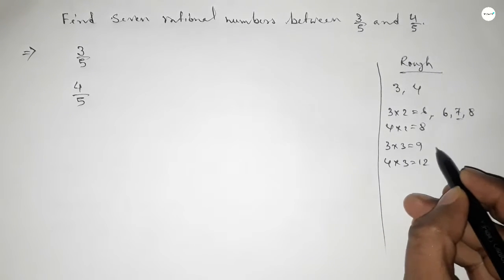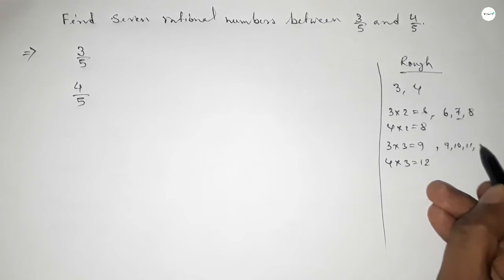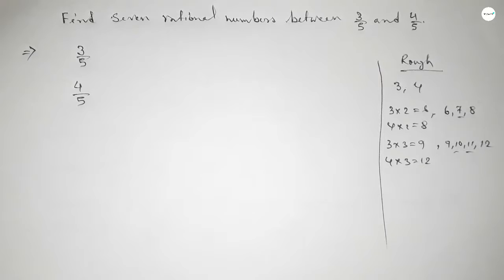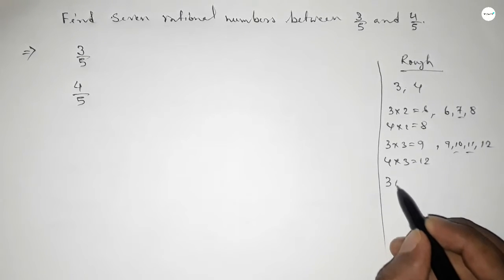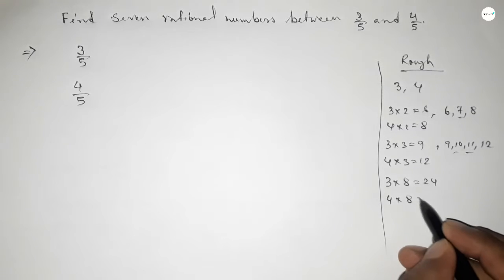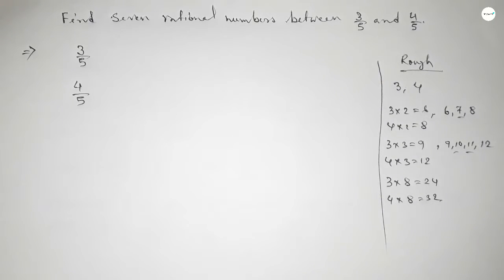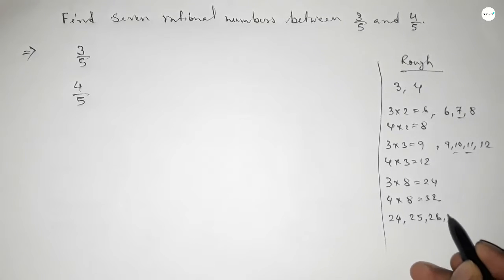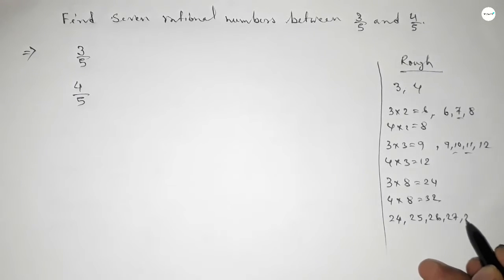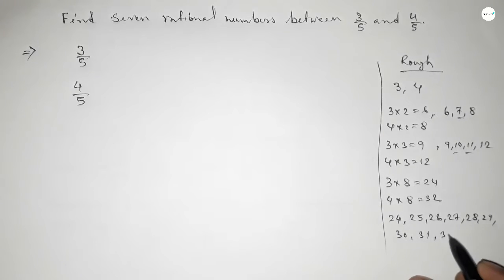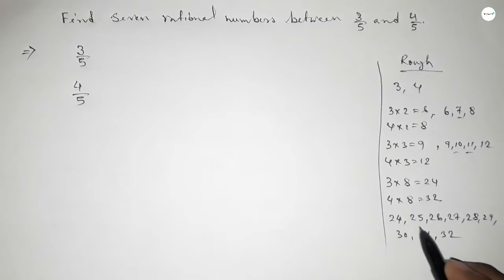If you multiply both numbers by 3, then between 9 and 12 we can get 2 natural numbers. So continuing this way, if you multiply by 8 — that is, 3 by 8 and 4 by 8 — we get between 24 and 32, where we can get seven natural numbers, and from these we can form 7 rational numbers between 3 over 5 and 4 over 5.